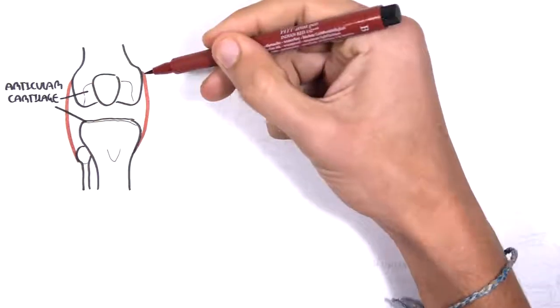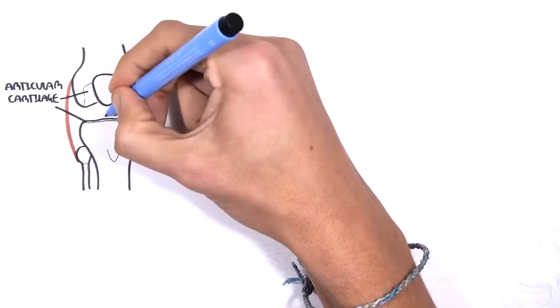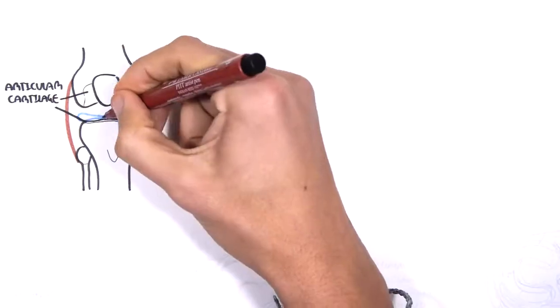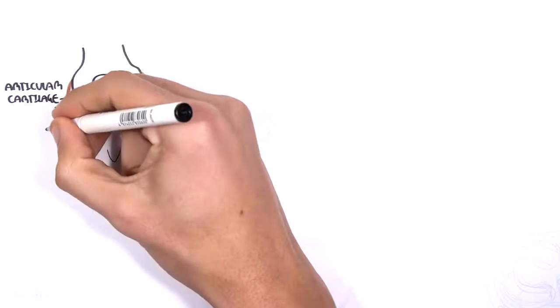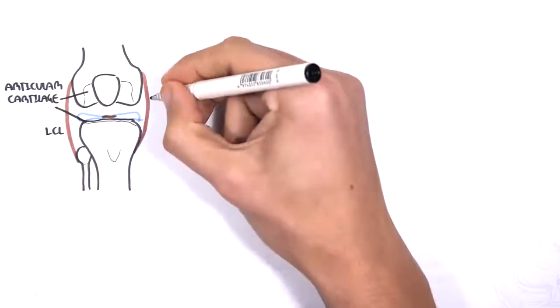You have many ligaments supporting the joint. But also here in blue we have the lateral and medial menisci. The ligament on the lateral side is the lateral collateral ligament and the ligament on the medial side is the medial collateral ligament.